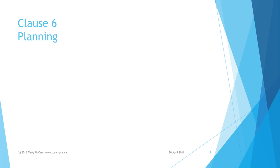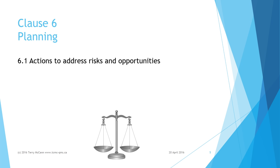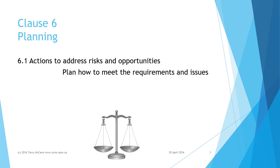Clause 6 talks about environmental aspects, which are elements of an organization's activities, products, or services that interact or can interact with the environment. Taking these into account, this clause requires your organization to develop a process to consider the risks and opportunities that could affect the performance of your EMS, and to use this risk planning process to plan how to meet the requirements and issues relating to interested parties identified in the context of the organization.